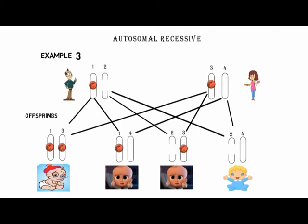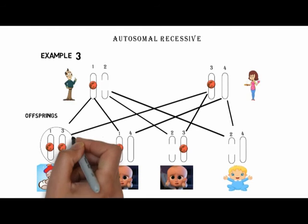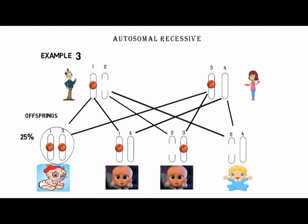So if a question comes, what is the risk of transmission of a disease if both parents are carriers? The answer would be 25 percent, one in four offspring. I hope this concept and question is clear to all of you because this is a frequently asked question in different competitive exams.